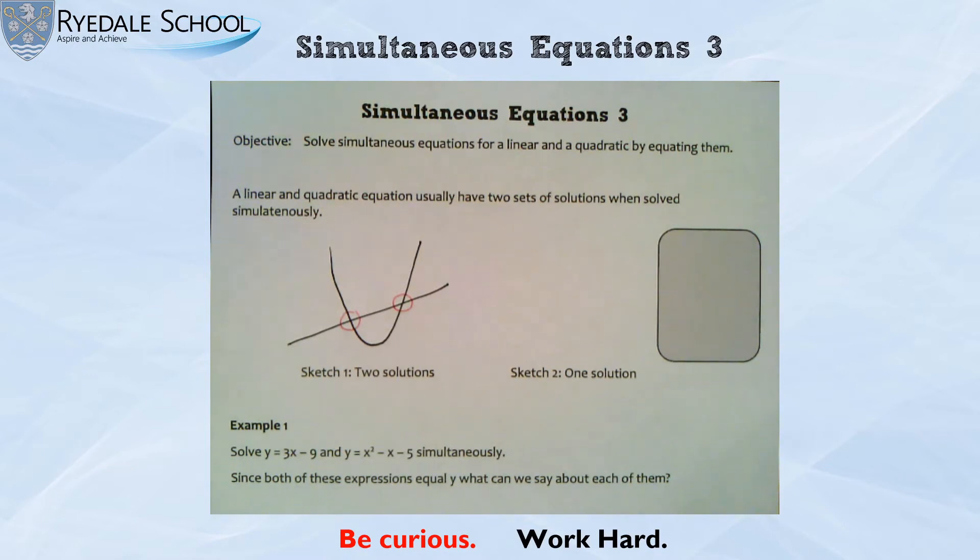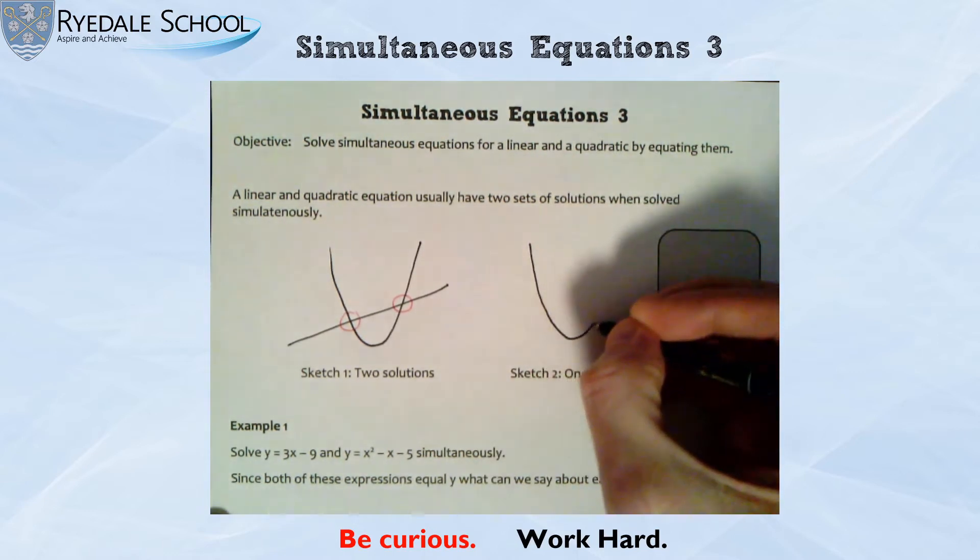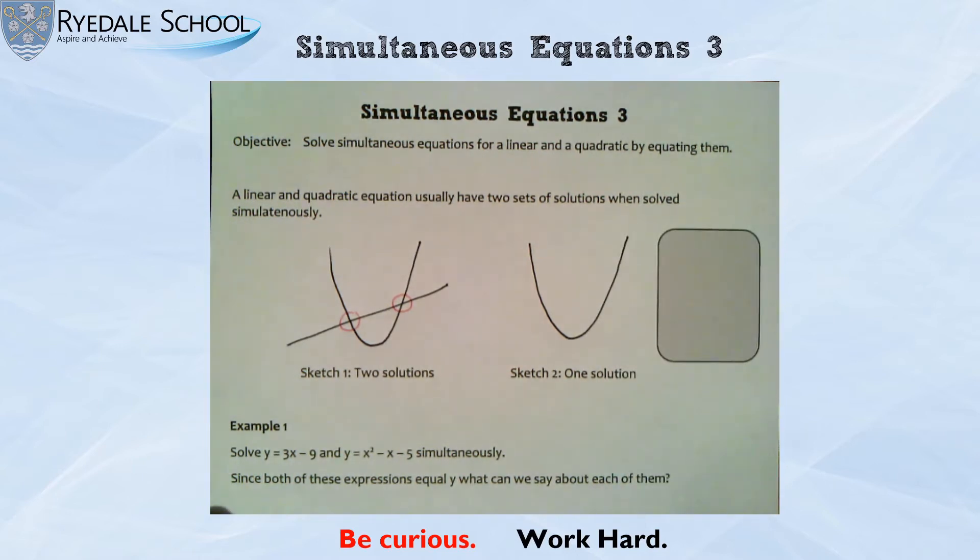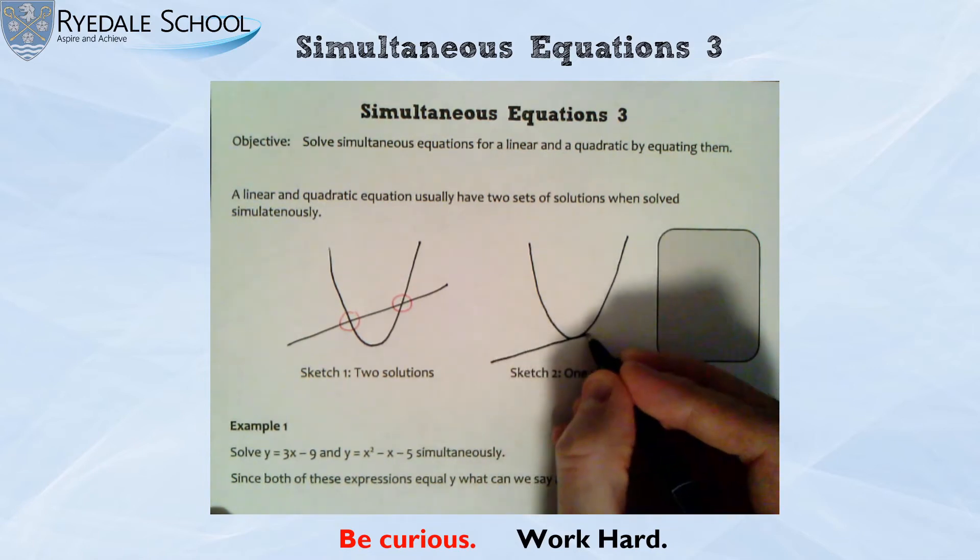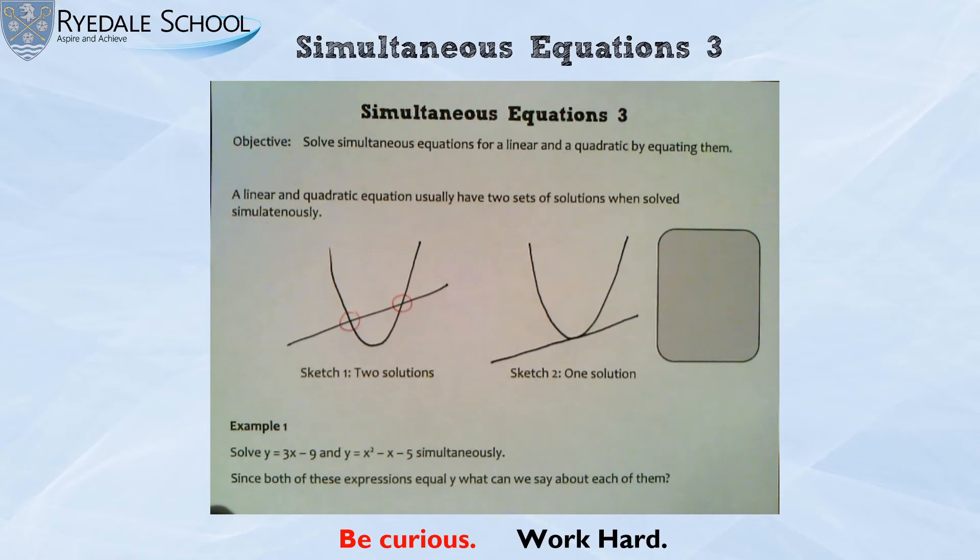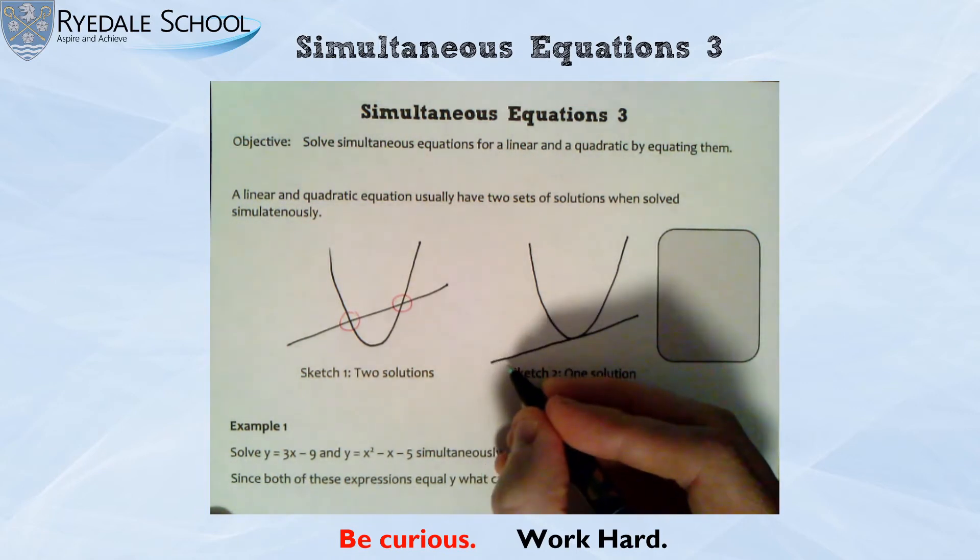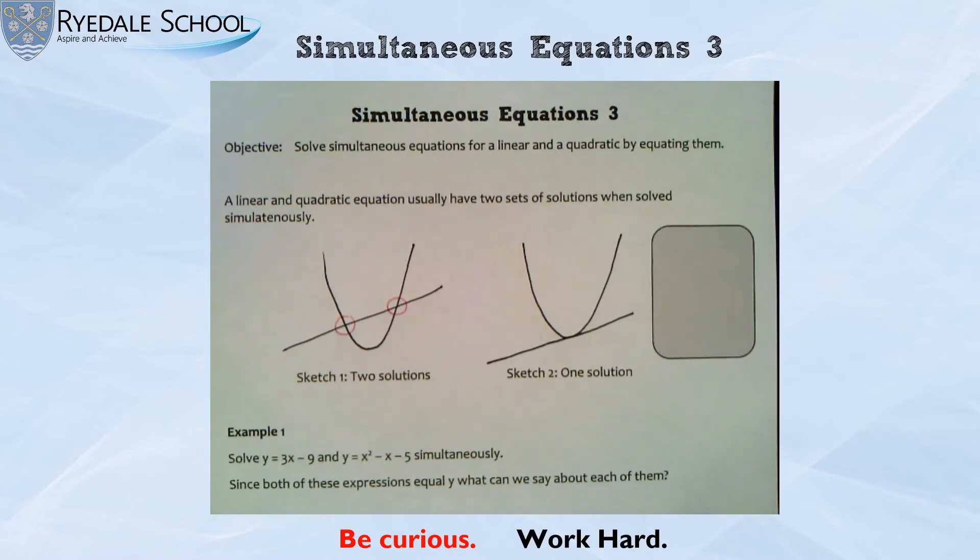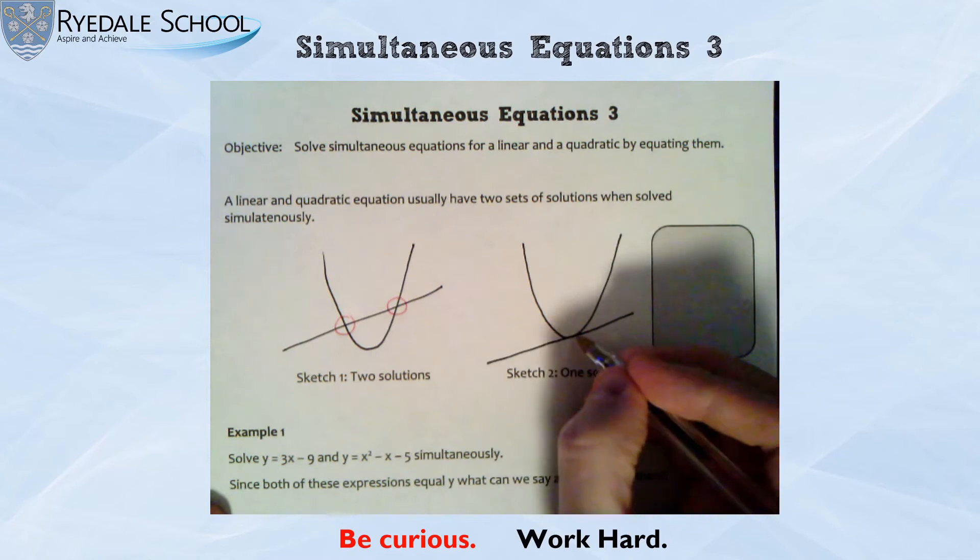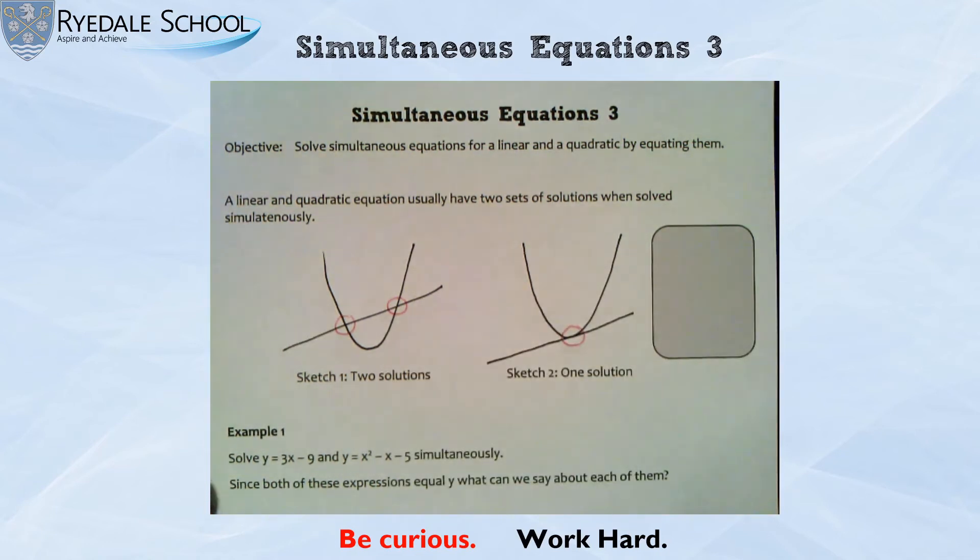Now that isn't the only scenario that can happen. You can actually get a very, very special case where you have a quadratic graph and your linear function just touches that curve at one point. Now some of you will recall what one of these lines is called when it just touches the curve. That is called a tangent. So in that case you would actually only get one solution to when you solved your quadratic and your linear graph.